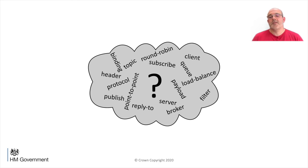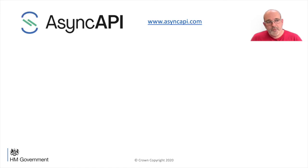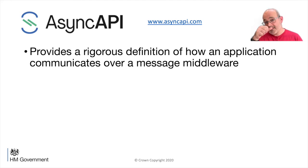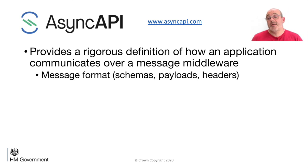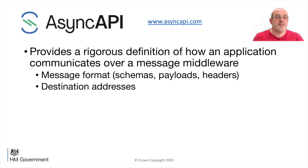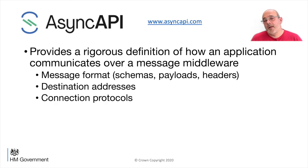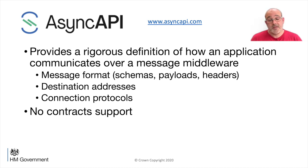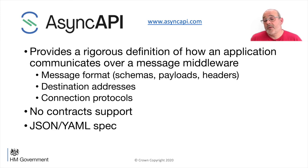When doing a distributed application, what goes on inside that cloud of messaging middleware? There are lots of concepts in there that don't really map to domain concepts, but we still need to be able to define them. What we've started to use is AsyncAPI, which provides a rigorous definition of how an application communicates over messaging middleware. It defines the message format - schemas, payload, headers. It defines addresses for publishing and subscribing. It talks about connection protocols. It doesn't have any support for contracts at the moment, although there is talk of adding replies in the future. And it's a JSON/YAML spec, which means it's parsable by a code generator, which is very handy.